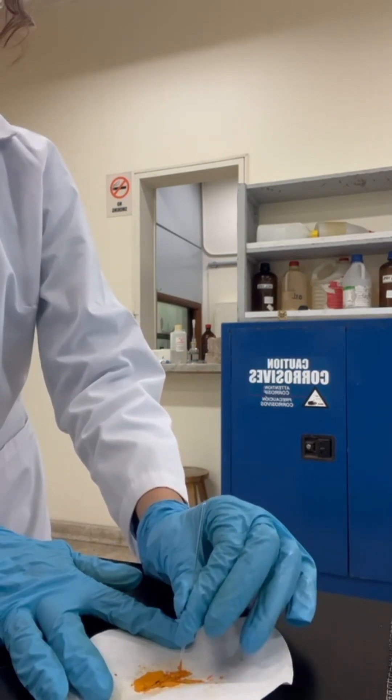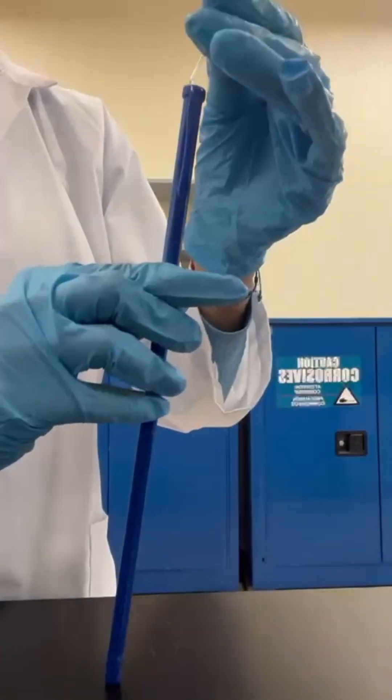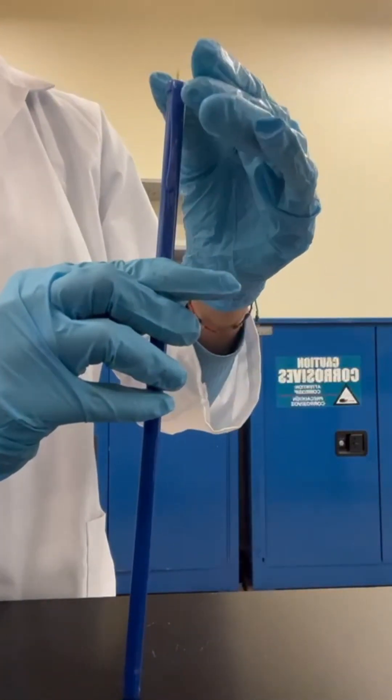I place the derivative in a capillary tube, then place it into the machine to observe the melting point and note down the temperature to be able to identify my unknown.